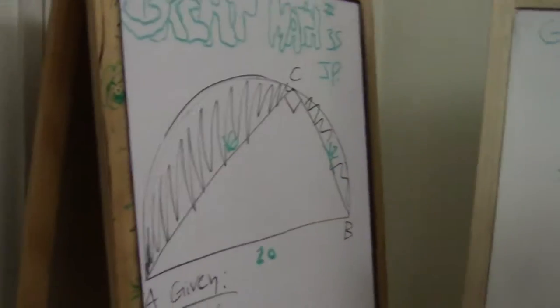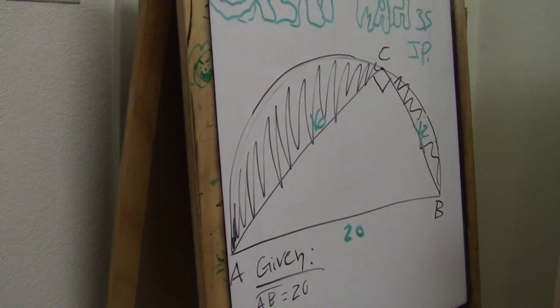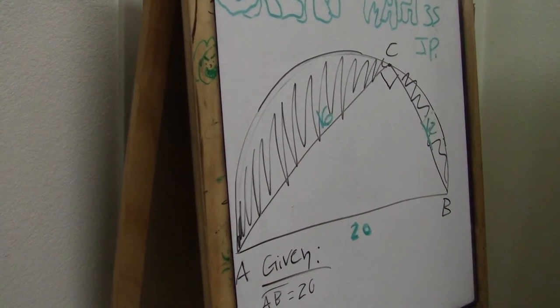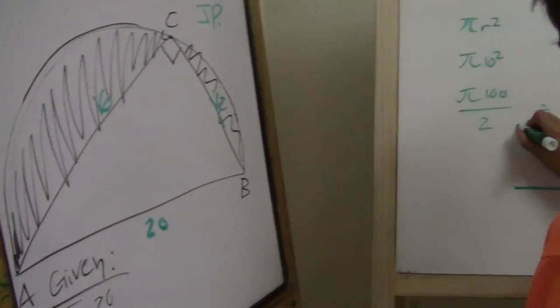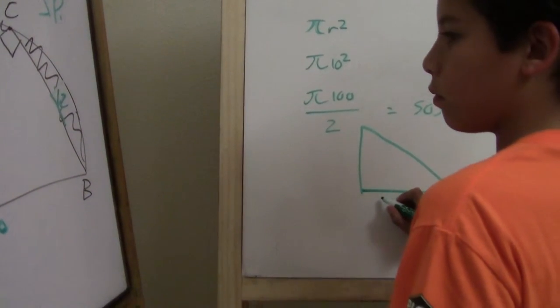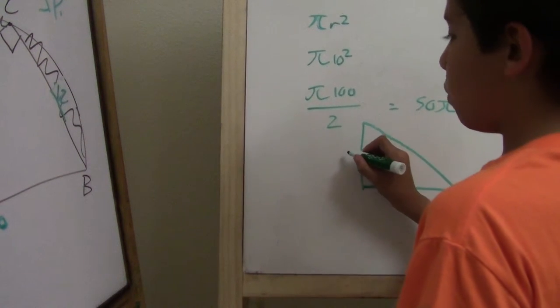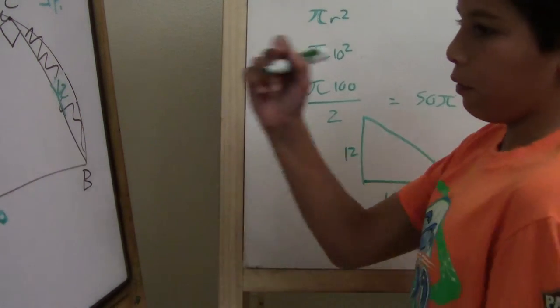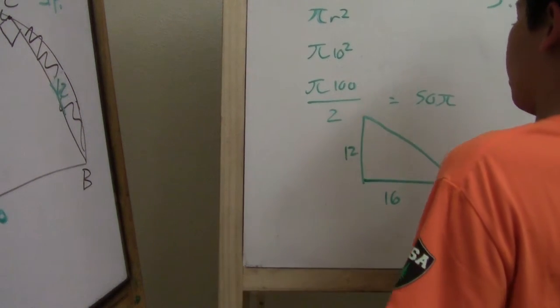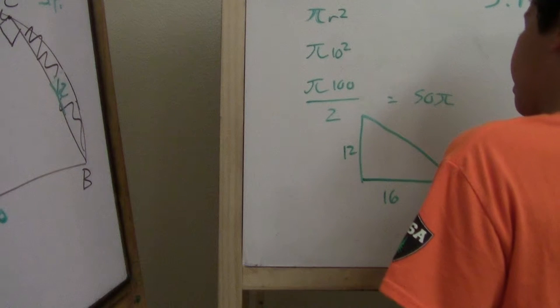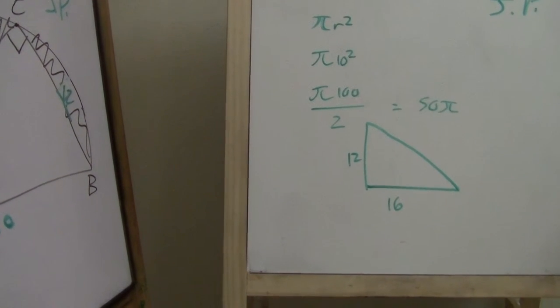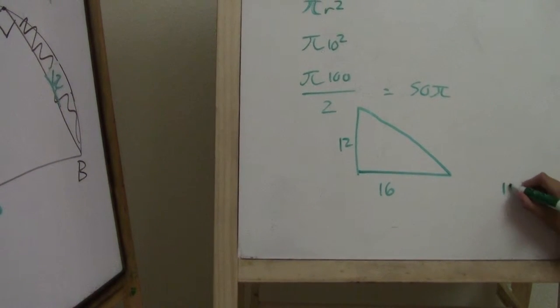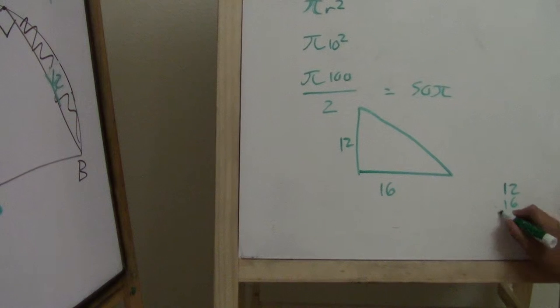Then, we try to find the area of this triangle here. So, let's do it. We know that that is 12, that's 16. We don't really have to know that that's 20, that's mainly for the circle. So we find that we get 12 times 16, we'll do that.